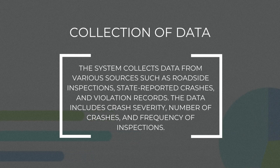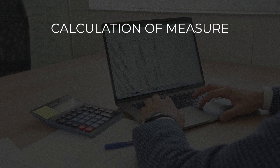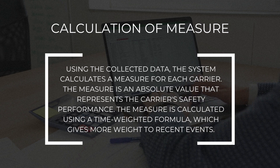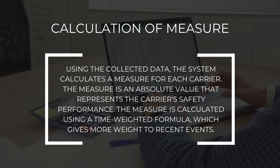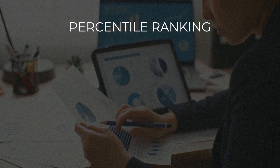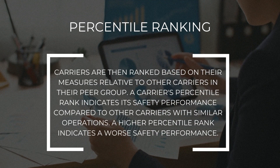The data includes crash severity, number of crashes, and frequency of inspections. Step two is calculation of measure: using the collected data, the system calculates a measure for each carrier. The measure is an absolute value that represents the carrier's safety performance and is calculated using a time-weighted formula, which gives more weight to recent events.